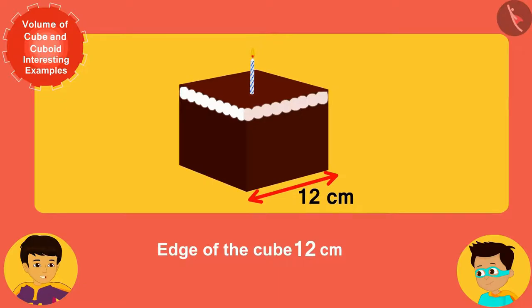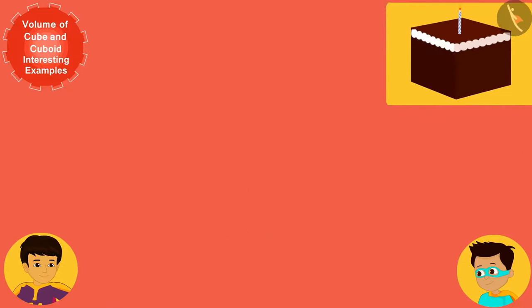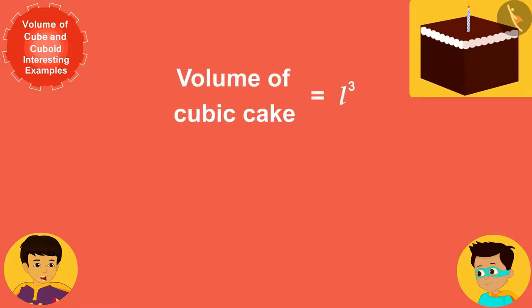As we know, the volume of any cube is equal to l³, where l is the measure of the edges of the cube. So if I replace l here with the actual measure of the edges of the cubic cake, that is 12, then